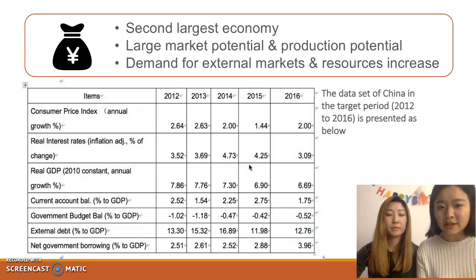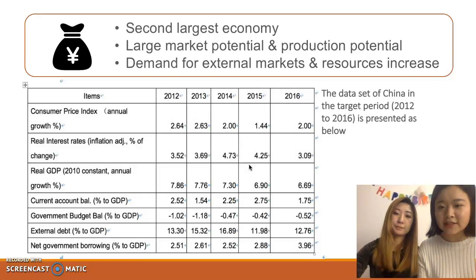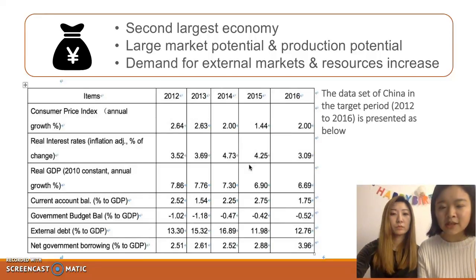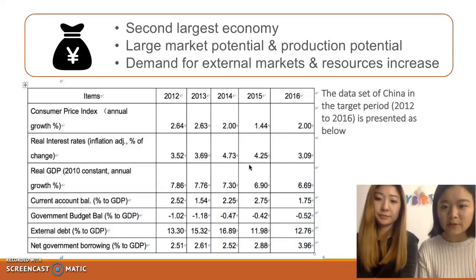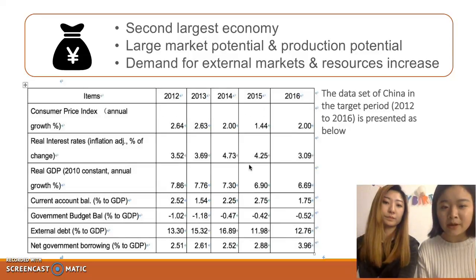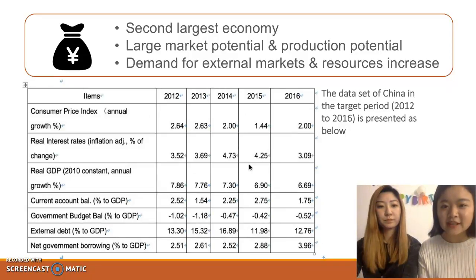Domestic market conditions. China has become the second largest economy in the world. This is data of China in the target period. The most significant event that happened in 2017 is that it has opened the 19th Communist Party Congress to decide that China should fulfill the modernization objective in the year 2035.